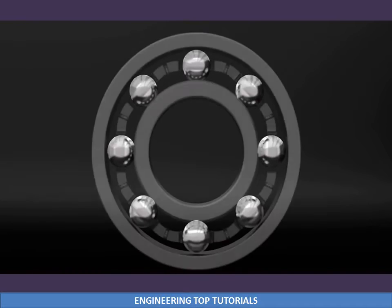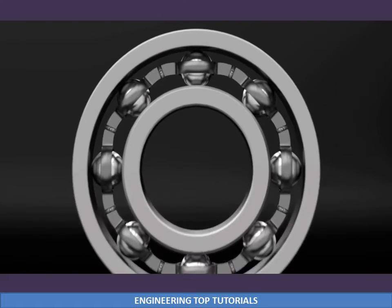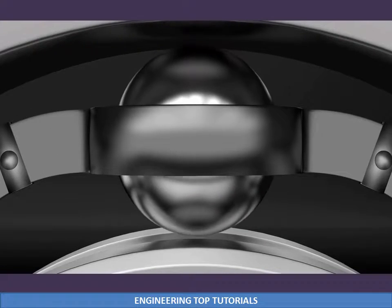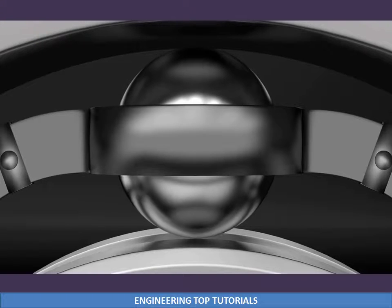The construction of a bearing consists of an outer race, inner race, and a rolling element lying between them.